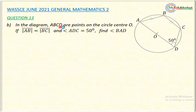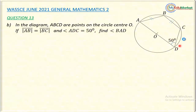In the diagram, A, B, C, D are points on a circle with center O. The length of line AB equals the length of line BC, as marked on the diagram. The angle ADC is 50 degrees. The question asks us to find the size of angle BAD.